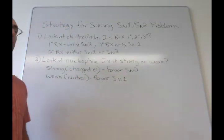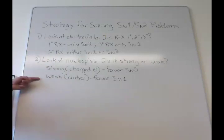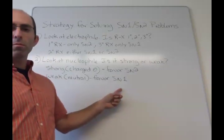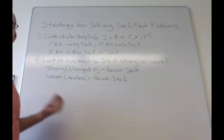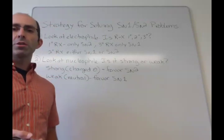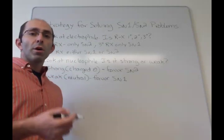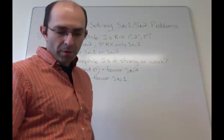So for example, if you have a secondary substrate and a weak nucleophile, you'll get SN1 as the reaction. If it's secondary with a strong nucleophile, you're going to get SN2. And again, as we said in class, this is an oversimplification because we also have to worry about elimination, but we'll start talking about that next week.